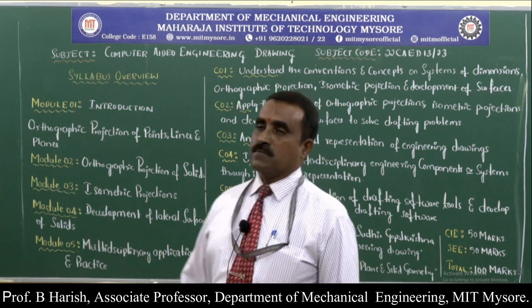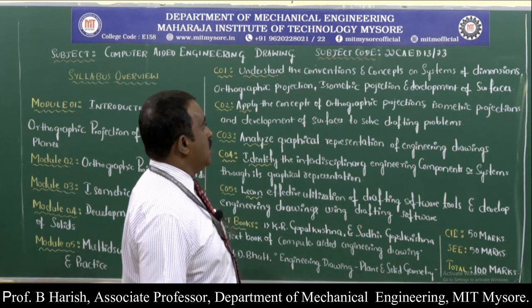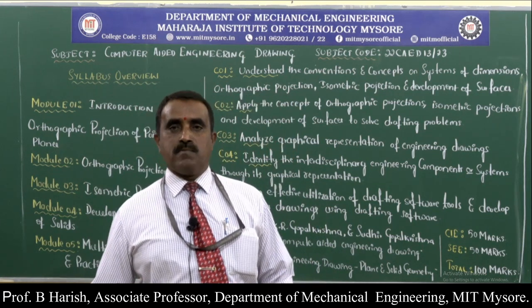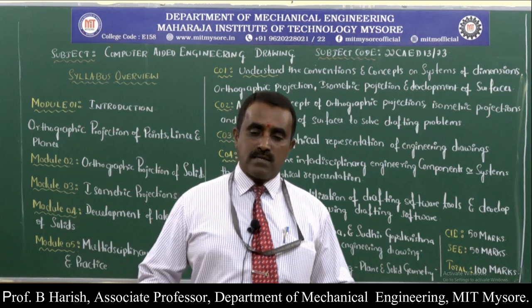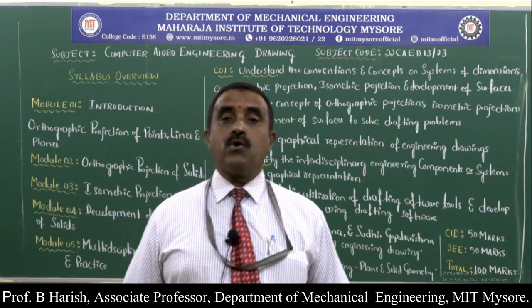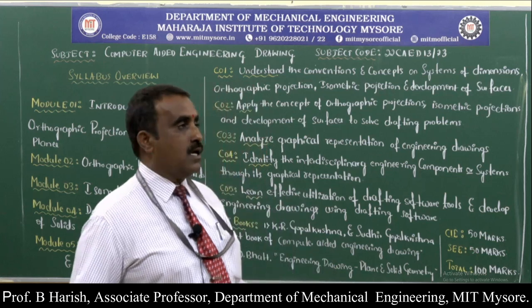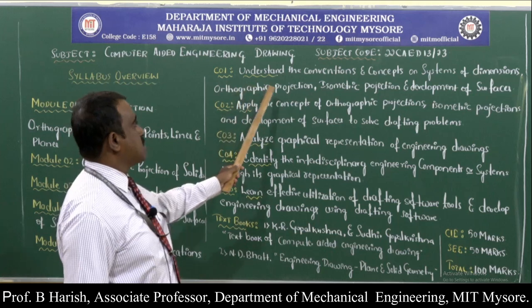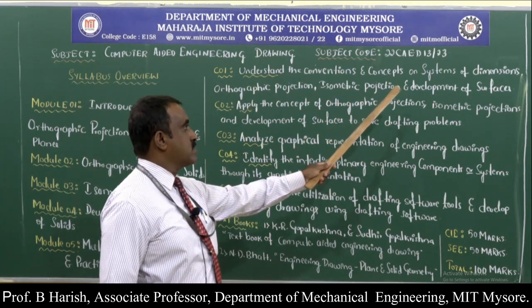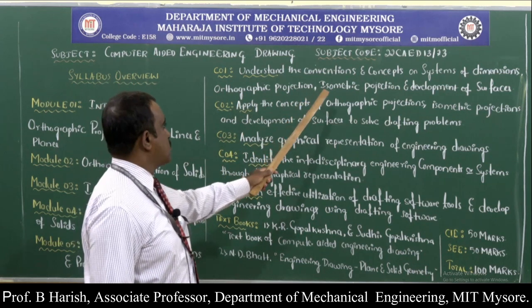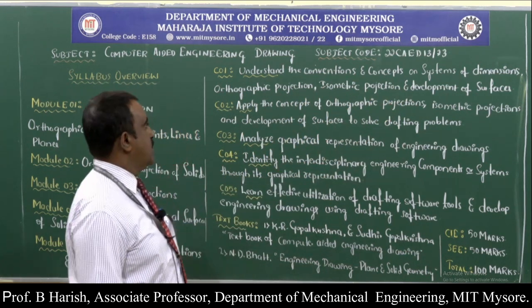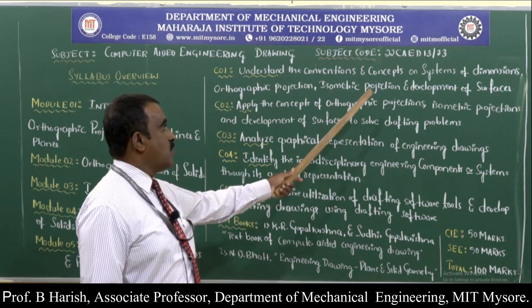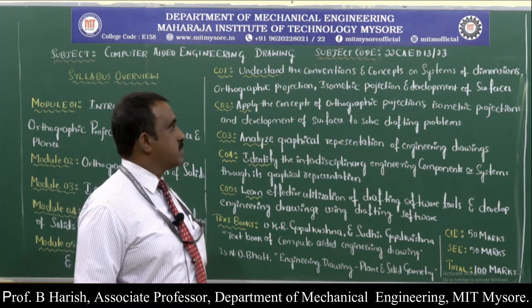The fifth module is only for regular internals as part of the semester scheme. These are the five different modules that come under the subject Computer Aided Engineering Drawing. Moving on to the COs — course outcomes. Once you study this subject, there are five identified COs. The first CO states: understand the conventions and concepts on systems and dimensions, orthographic projection, isometric projection, and development of surfaces.